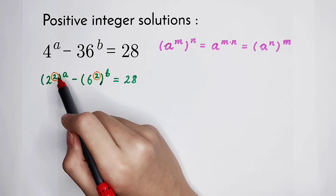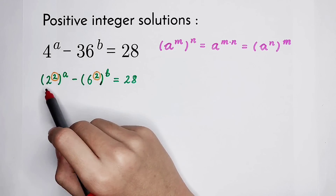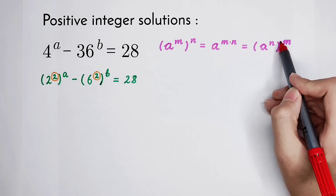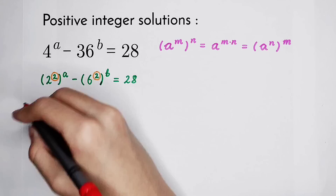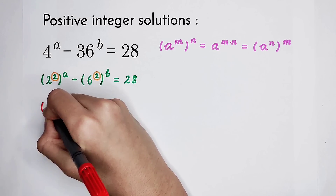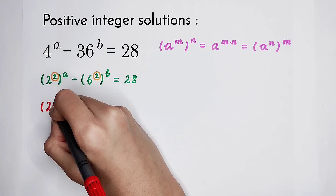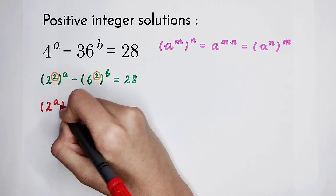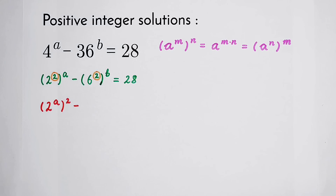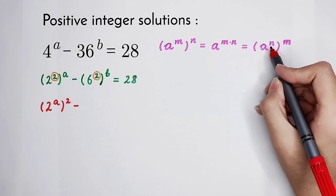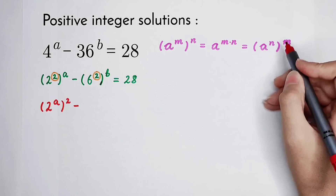2 to the power of 2, all to the power of a, is equal to 2 to the power of a, all to the power of 2. Minus 6 squared, all to the power of b, is equal to 6 to the power of b, all squared.